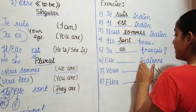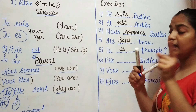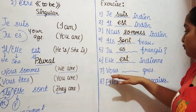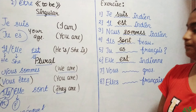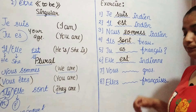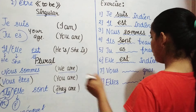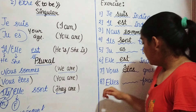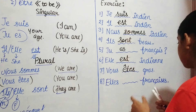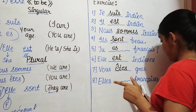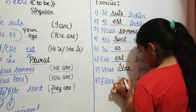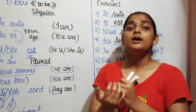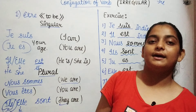Sixth: elle ___ indienne — 'she ___ Indian.' The answer is elle est indienne. Seventh: vous ___ gros — 'you ___ fat.' The answer is vous êtes. Eighth involves ils sont français — they are French. I hope the conjugation of the verb être was very clear to you. If you have any doubts, you can ask me in the comments. Bye bye and thanks for watching.